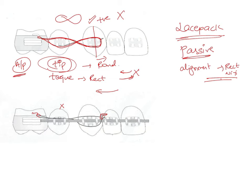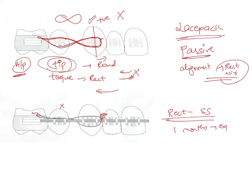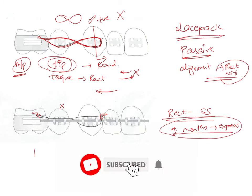A passive tie back is given after the rectangular NiTi stage — during the rectangular stainless steel wire stage. After completing alignment and leveling, and before starting space closure, we place a rectangular stainless steel wire and keep it for one month to allow torque expression before beginning space closure. In this stage, we give a passive tie back.